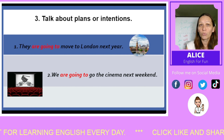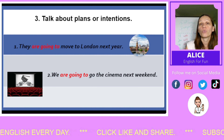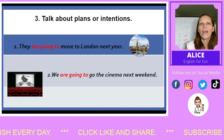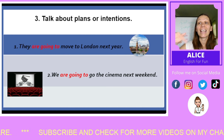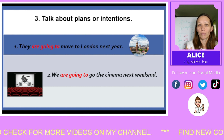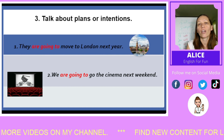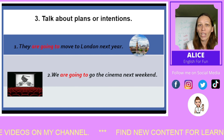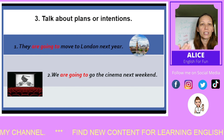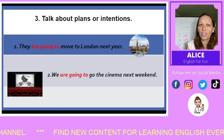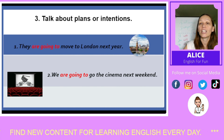Number three: when we're talking about our plans and intentions, we should use the more complex structure 'to be going to'. For example: 'They are going to move to London next year' — they are planning, they have been thinking about it. 'We're going to go to the cinema next weekend' — this is our intention, something we are planning to do. That's why we use 'to be going to'.